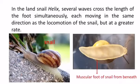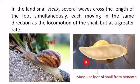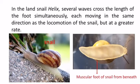In the case of a land snail, several waves cross the length of the foot simultaneously. Here is a photo of a land snail showing its muscular foot. This image shows the muscular foot of the snail from beneath. Each wave moves in the same direction as the locomotion of the snail but at a greater rate.